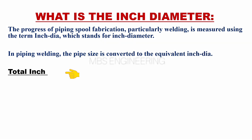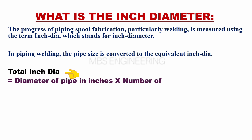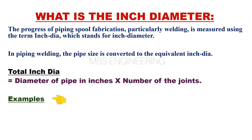The equation for calculating the inch dia is: Total inch dia equals the diameter of the pipe in inches multiplied by the number of joints. The below sample examples are for better understanding.